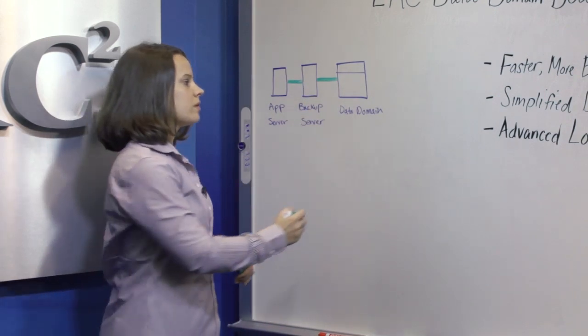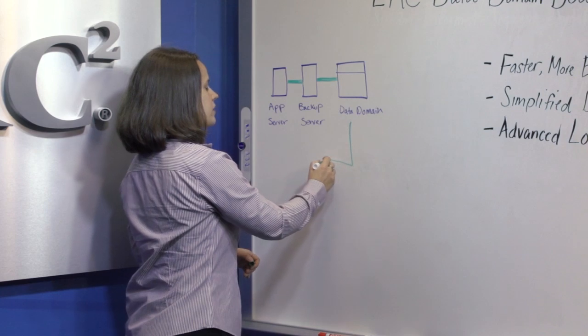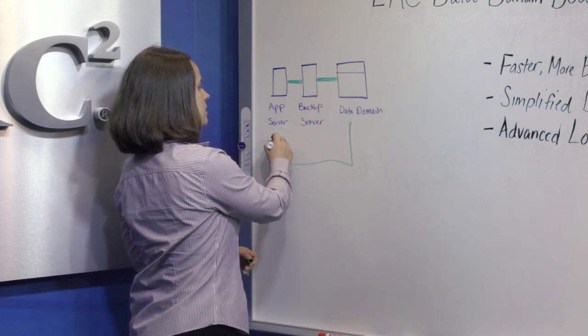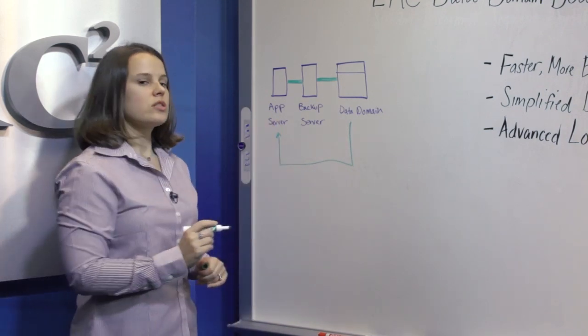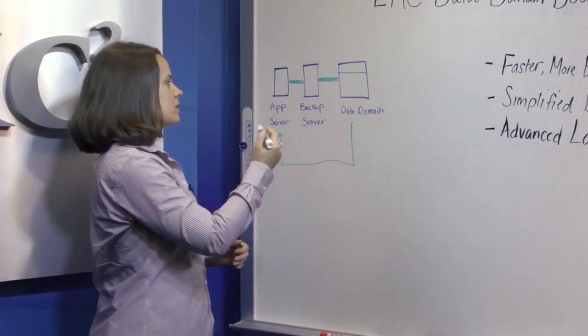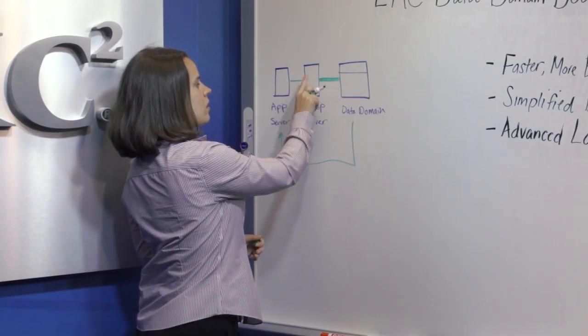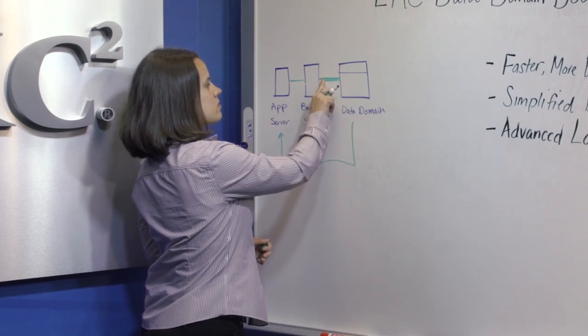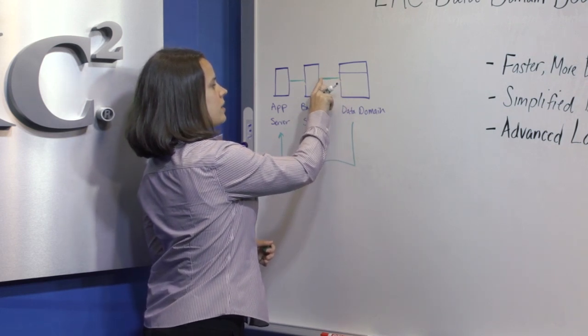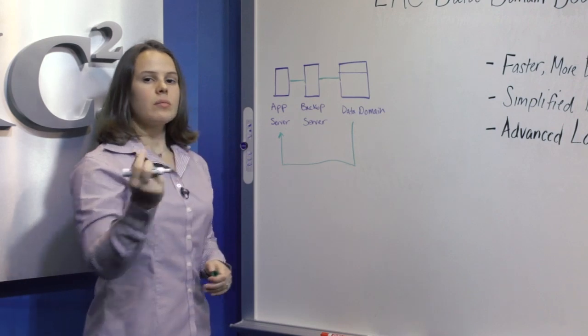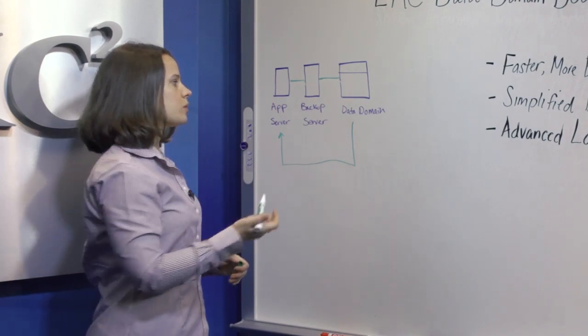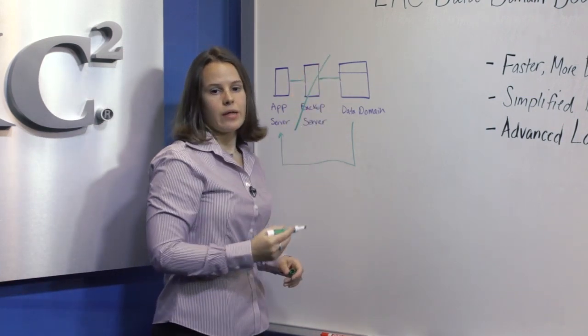With DD Boost, the deduplication process is distributed from the data domain system to the application server. This enables the application server to only send unique data over the network to the backup server and then to the data domain system. In some cases, this will also enable you to eliminate the backup server from the data path.